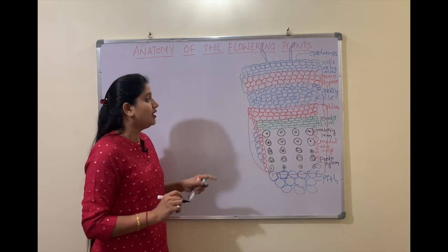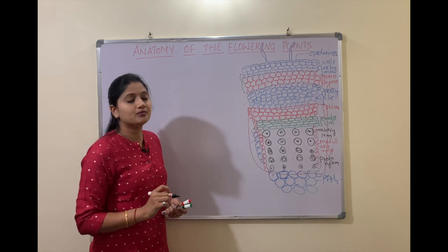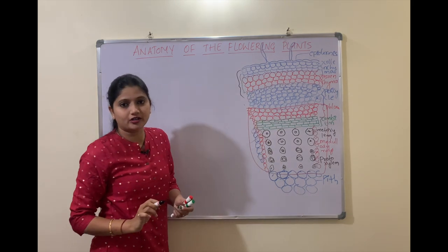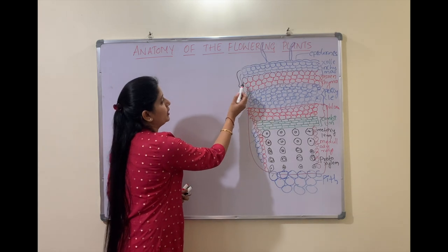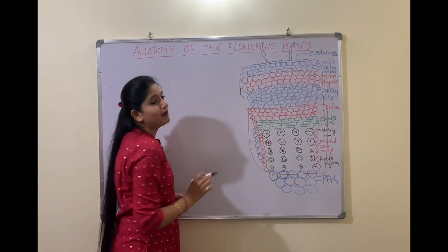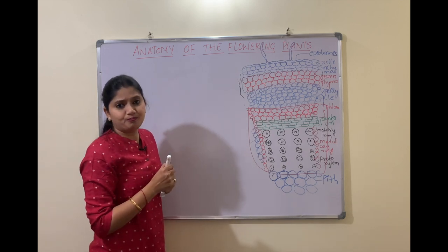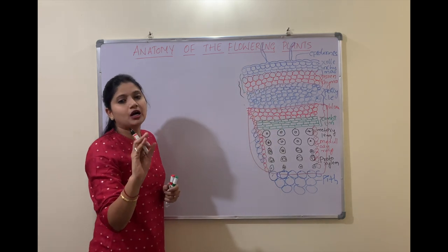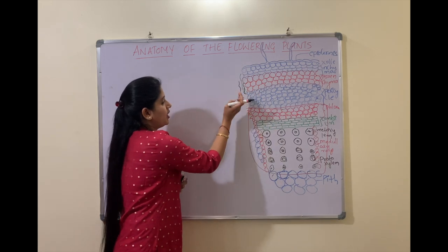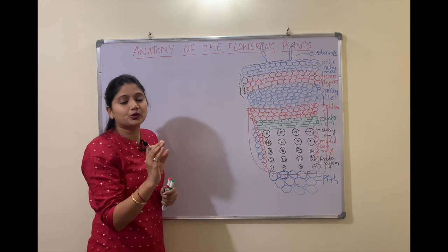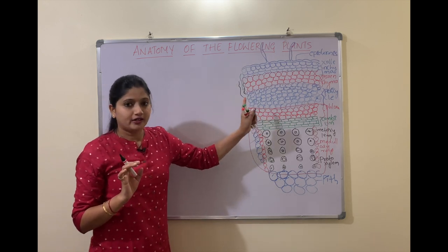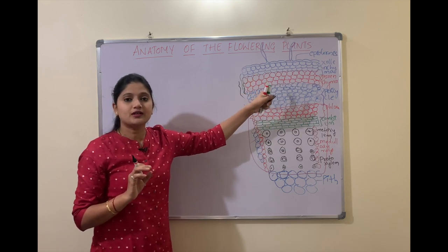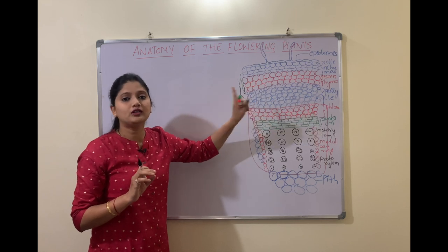We know that vascular cambium activity was seen in the vascular region. Now the activity of the cork cambium is seen in the region of the cortex. The cortex is made up majorly of parenchyma. A couple of layers of the parenchyma will get converted into the meristematic cells. We are speaking about the secondary growth that takes place in the region of the cortex due to the activity of the cork cambium.